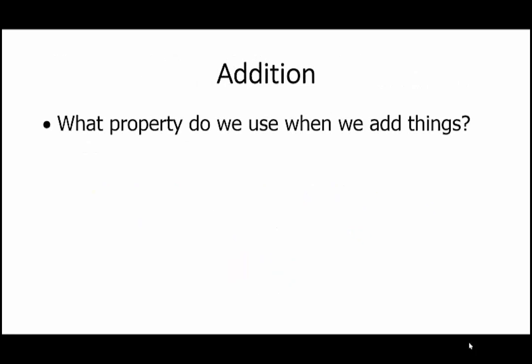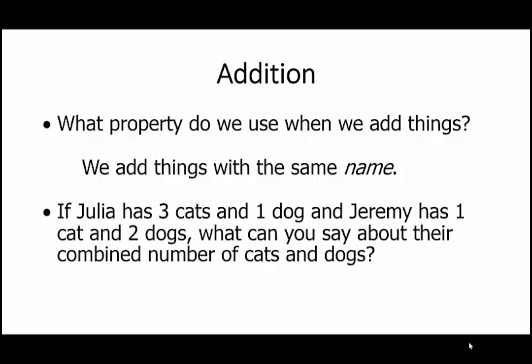Because what property do we use when we add things? Yes, we add things with the same name. Consider this. If Julia has three cats and one dog, and Jeremy has one cat and two dogs, what can you say about their combined number of cats and dogs?